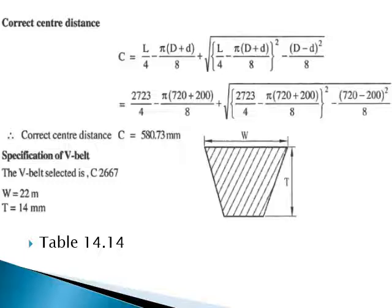For the selected V-belt C = 2667, referring to Table 14.14, the width = 22 millimeters and thickness = 14 millimeters. This is how you select the belt specifications — width, thickness, and the number of belts required — completing the full V-belt drive design problem.